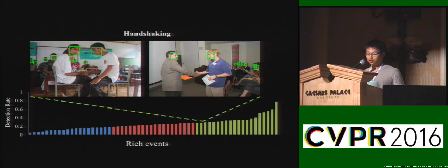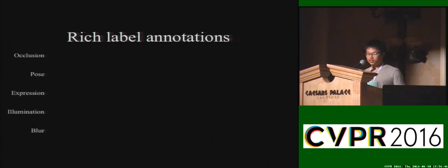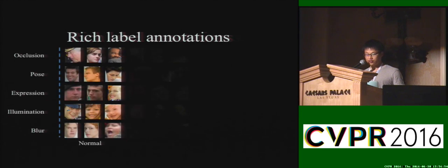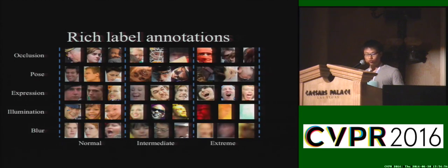So far we have seen lots of variations in WiderFace. Designing a robust detector that covers all these variations is still an open problem. To help design more robust detectors, cover different variations, and support fine-grained evaluations, we labeled five face attributes: occlusion, pose, expression, illumination, and blurriness. For each attribute, we labeled their levels from normal to extreme.